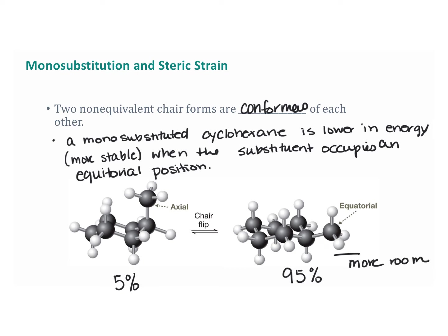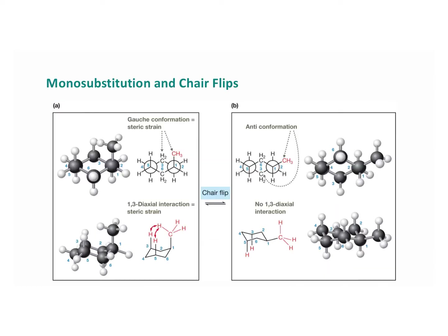To see why, we're going to compare the methylcyclohexane with the axial CH3 group to the methylcyclohexane with the equatorial CH3 group. When we look at the axial position, which is right here — this is axial — we're going to notice that this has some significant steric strain.